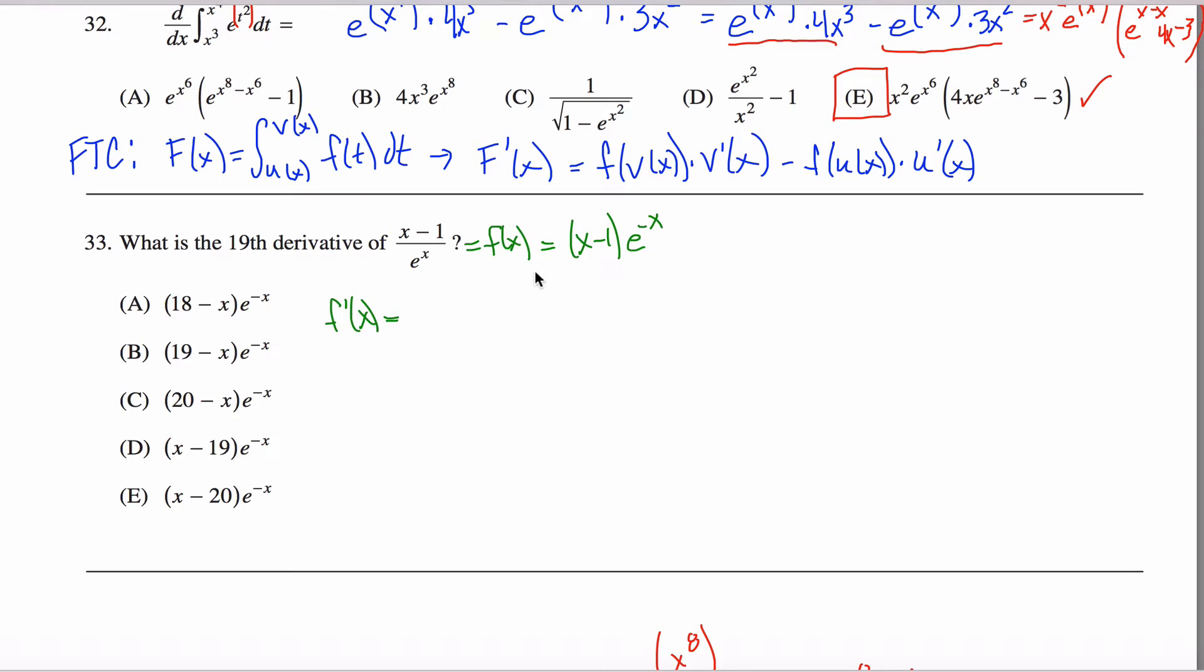So the derivative product rule, f prime, so the derivative of this thing is just 1 times g which would be e to the negative x power plus g prime, so the derivative of this guy, well, I've got to use the chain rule and I get minus e to the minus x times, leave this guy alone, x minus 1.